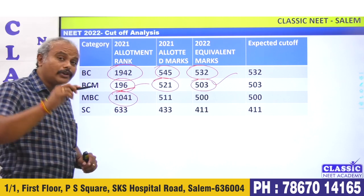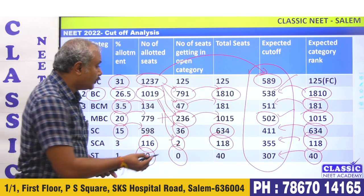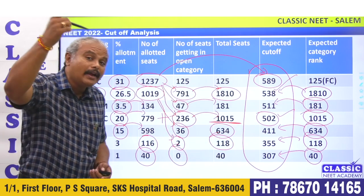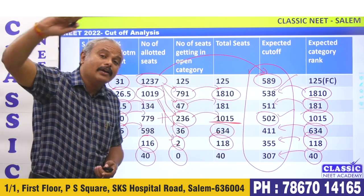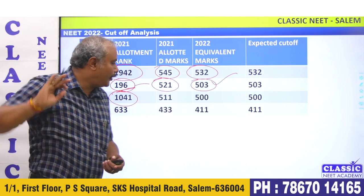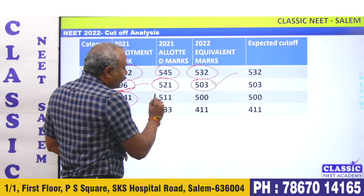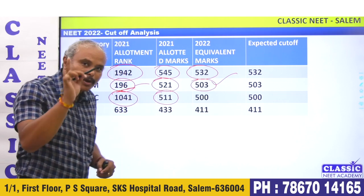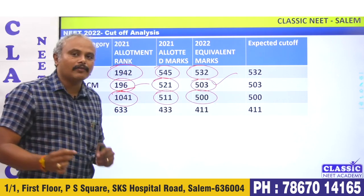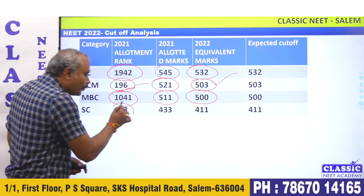MBC is the 1041st rank — we are talking about the 1015th rank. In All India, we are going to get a mark of 1041. Last year, 501 mark corresponds to MBC. SC is rank 6033, and last year 403 mark corresponds to this category.